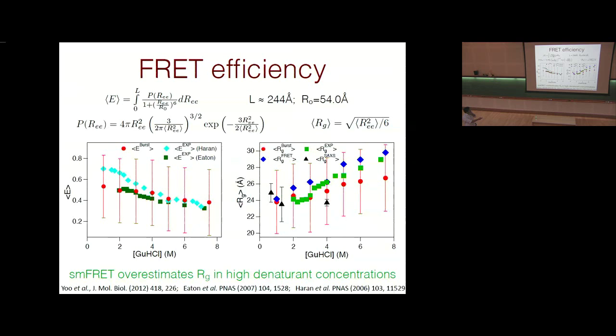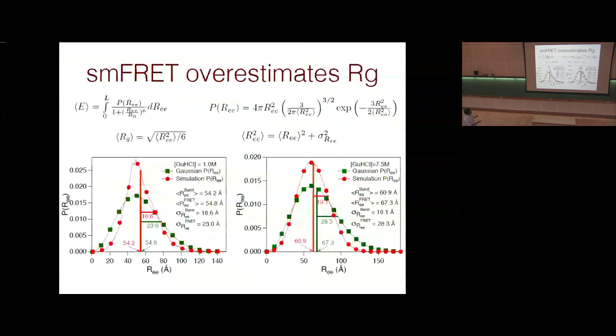To understand why this happens, we plot the true end-to-end distance distribution from simulation against the Gaussian chain fit. At low concentrations, the averages agree but there is a discrepancy in the widths of the distributions. At high concentrations, there is a mismatch in both the averages and the variance. This explains why the deviation between the FRET-estimated Rg and the real Rg increases as a function of denaturant concentration.